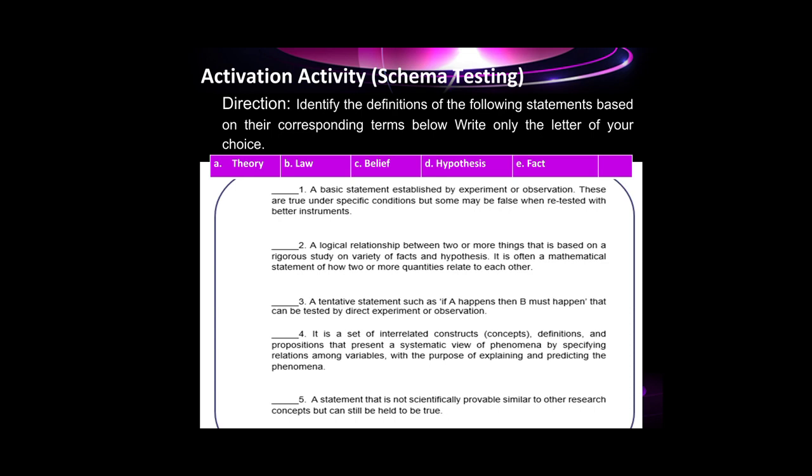The first question: a basic statement established by experimental observation — these are true under specific conditions, but some may be false when re-tested with better instruments. The answer is letter E, fact. Number 2: a logical relationship between two or more things based on a rigorous study on a variety of facts and hypotheses — often a mathematical statement of how two or more quantities relate to each other. The correct answer is letter B, law.